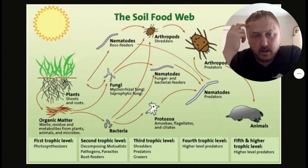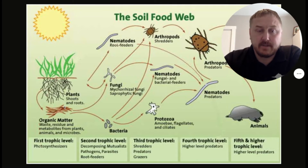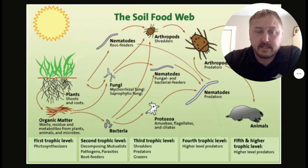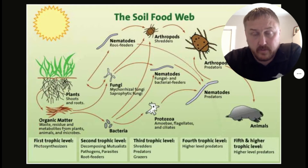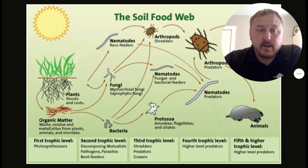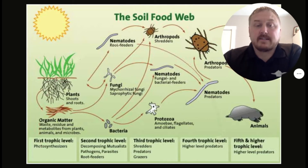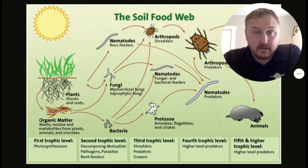All of those second trophic level producers are getting their energy either directly from the living plant or from its waste material — the organic material coming from the plant. That includes roots dying off through the natural cycles of the plant, or the above-ground plant matter dying off and being worked into the soil, broken down by bacteria and other organisms. It's not organic matter just from plants — there are also residues, metabolites, and waste that come from animals and from the microbes themselves.